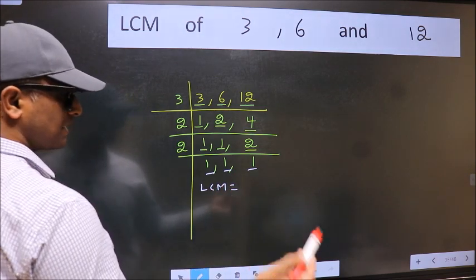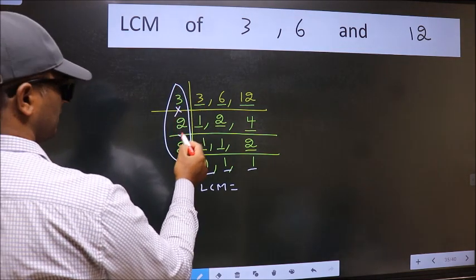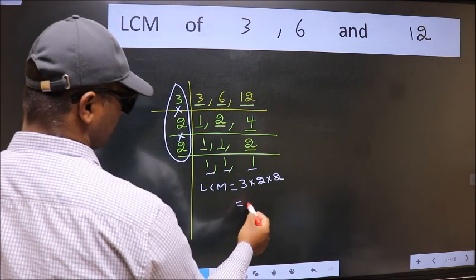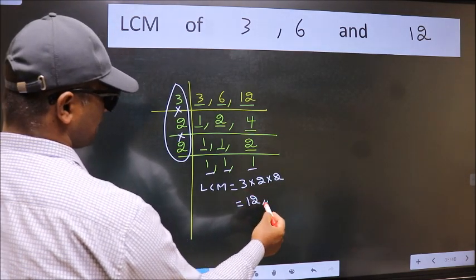LCM is the product of these numbers that is 3 into 2 into 2 into 2. When we multiply these numbers we get 12 is our LCM.